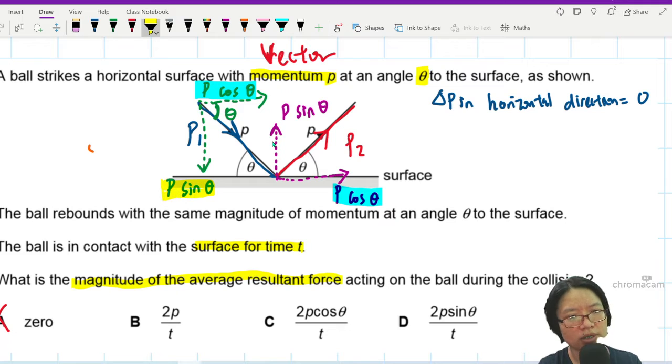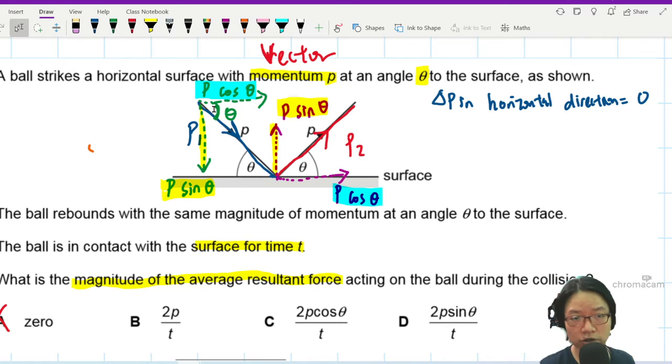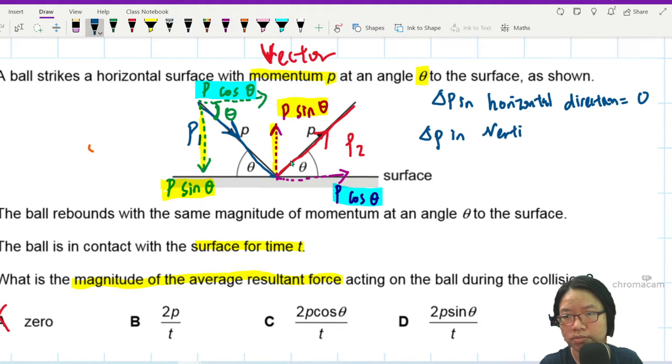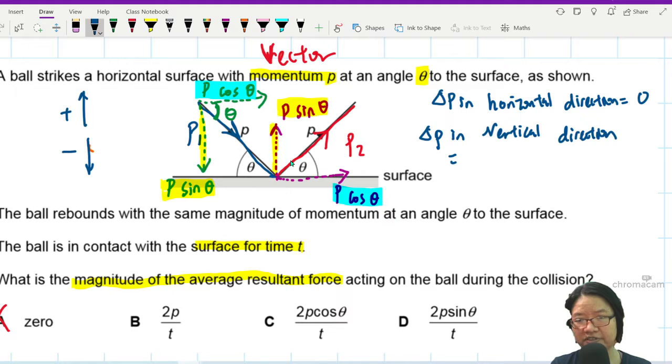The only change in momentum is in the vertical direction. It was p sin theta downwards. Now it is p sin theta upwards. So the vertical component changes. Horizontal component is the same. Change in momentum in vertical direction will be equal to—let's take up as positive, down as negative. So final minus initial. Final is positive p sin theta minus initial negative p sin theta.